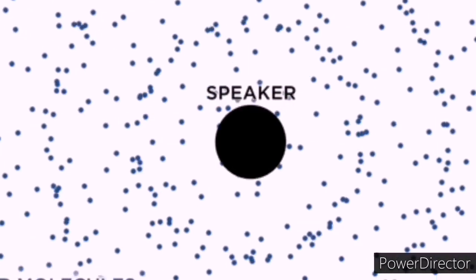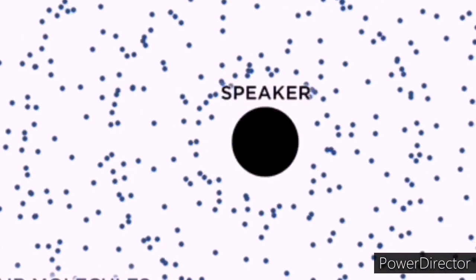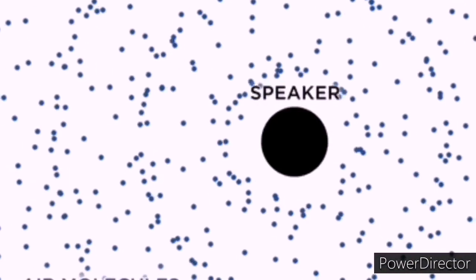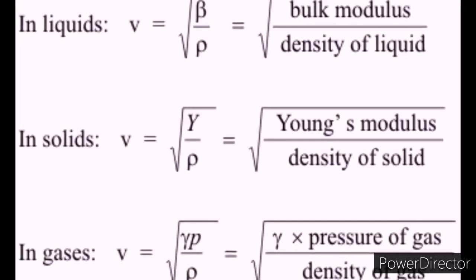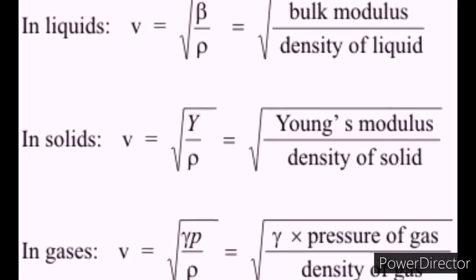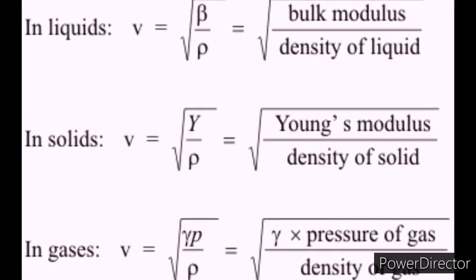As the source continues to vibrate the medium, the vibrations propagate away from the source at the speed of sound, thus forming the sound wave. At a fixed distance from the source, the pressure, velocity and the displacement of the medium vary in time.